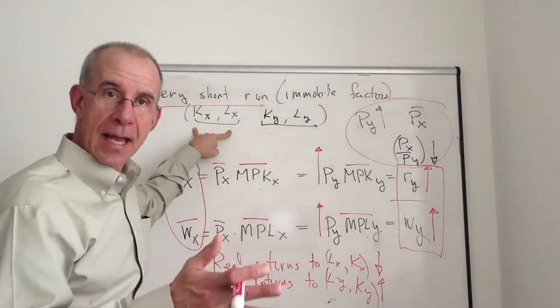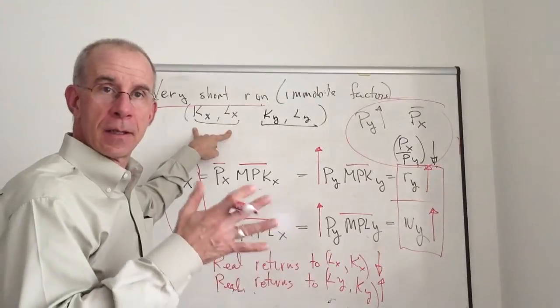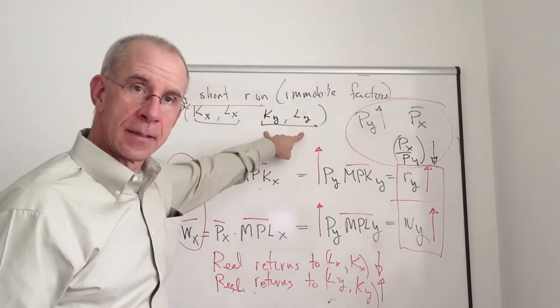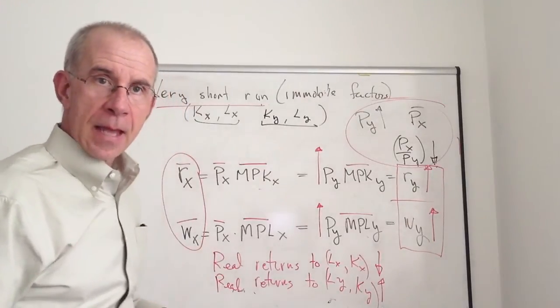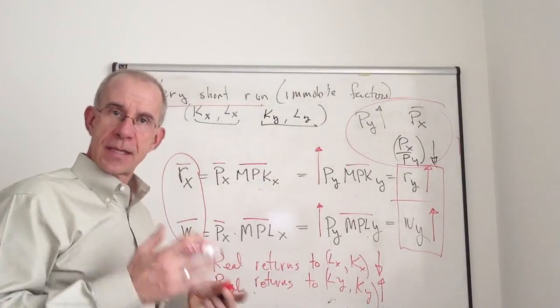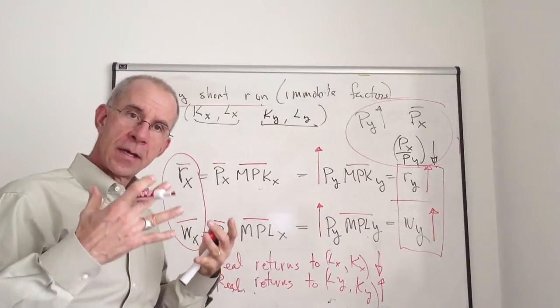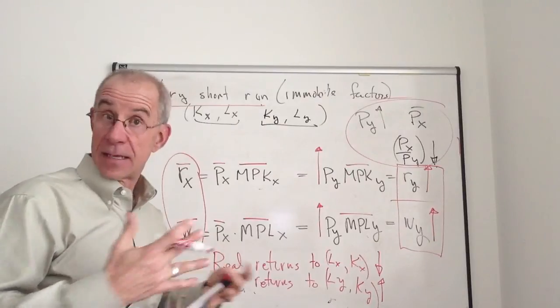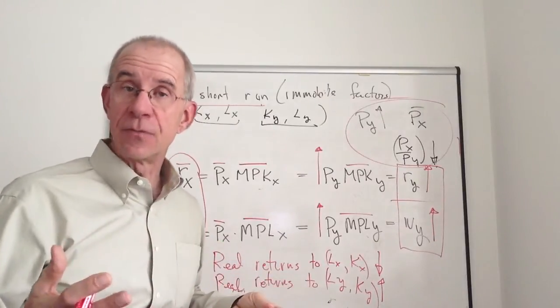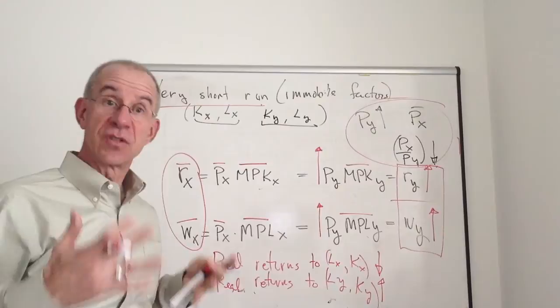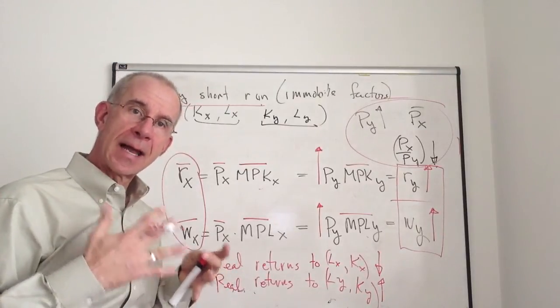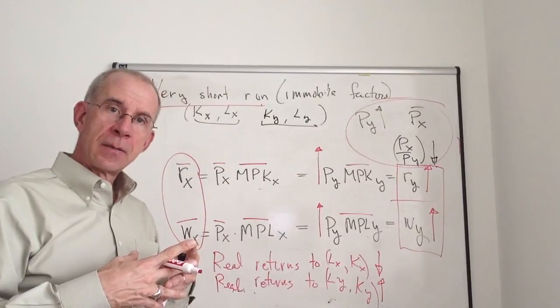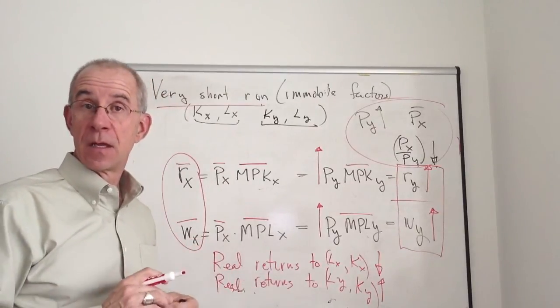Exactly the opposite in the sector whose relative price has fallen. They get hurt. Labor and capital aligned on X in terms of their economic interests. Labor and capital aligned in good Y. And this is a very broad and common theme. The more factors are tied to an industry - in other words, they can't leave that industry, they're stuck - the more they're going to see their economic interests tied up with the price of the good in the industry where they're employed.